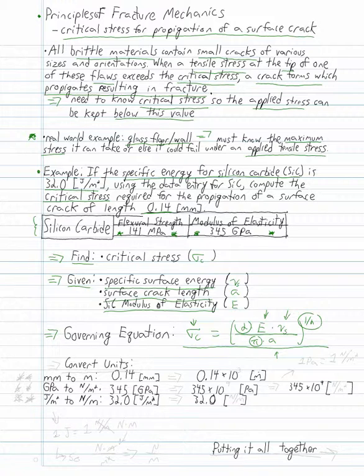Before we can start plugging these values in, though, we have to convert units. Our first conversion we want to make is going to be the millimeters to meters. So we have the 0.14 for that crack length, and we want to convert that to 0.14 times 10 to the negative third meters.